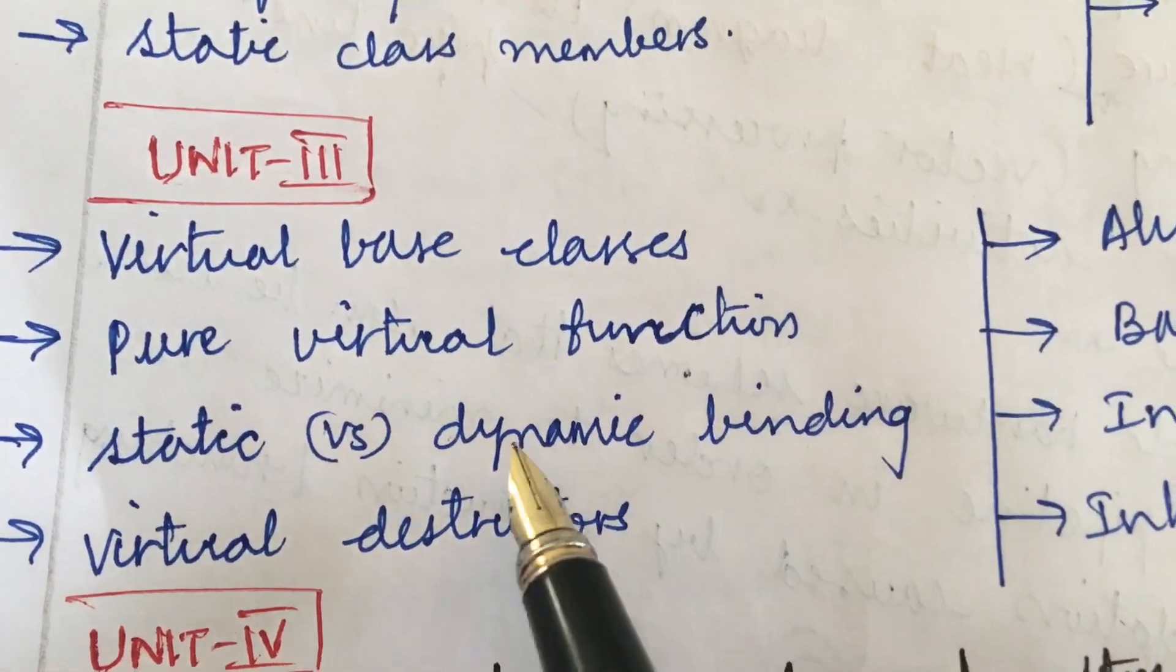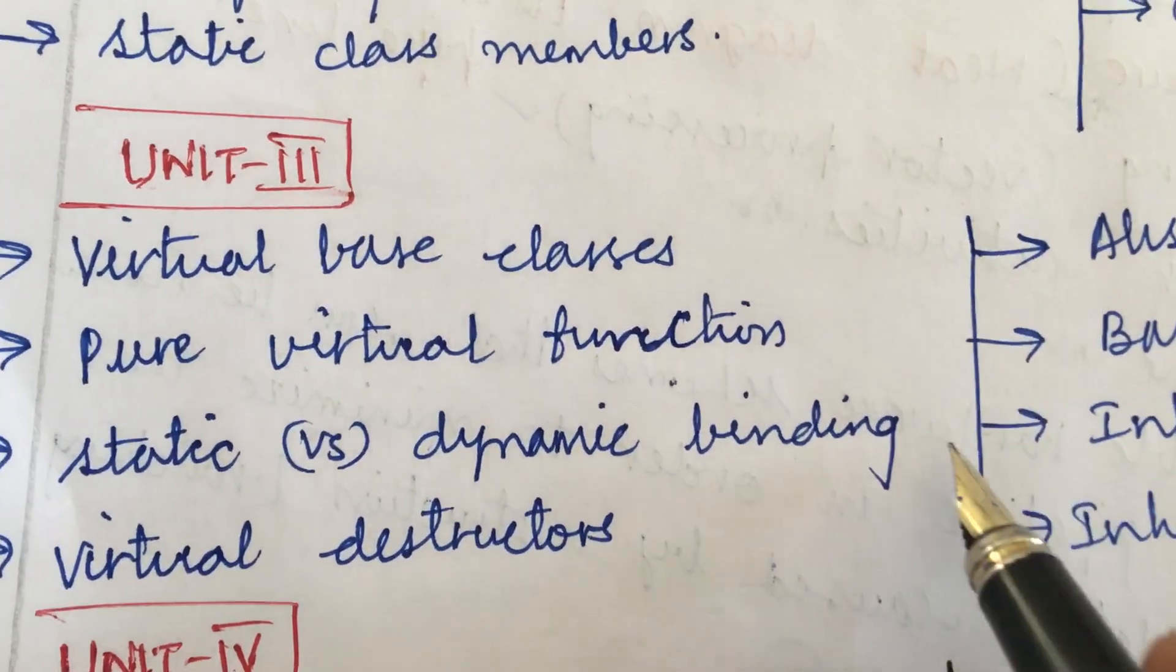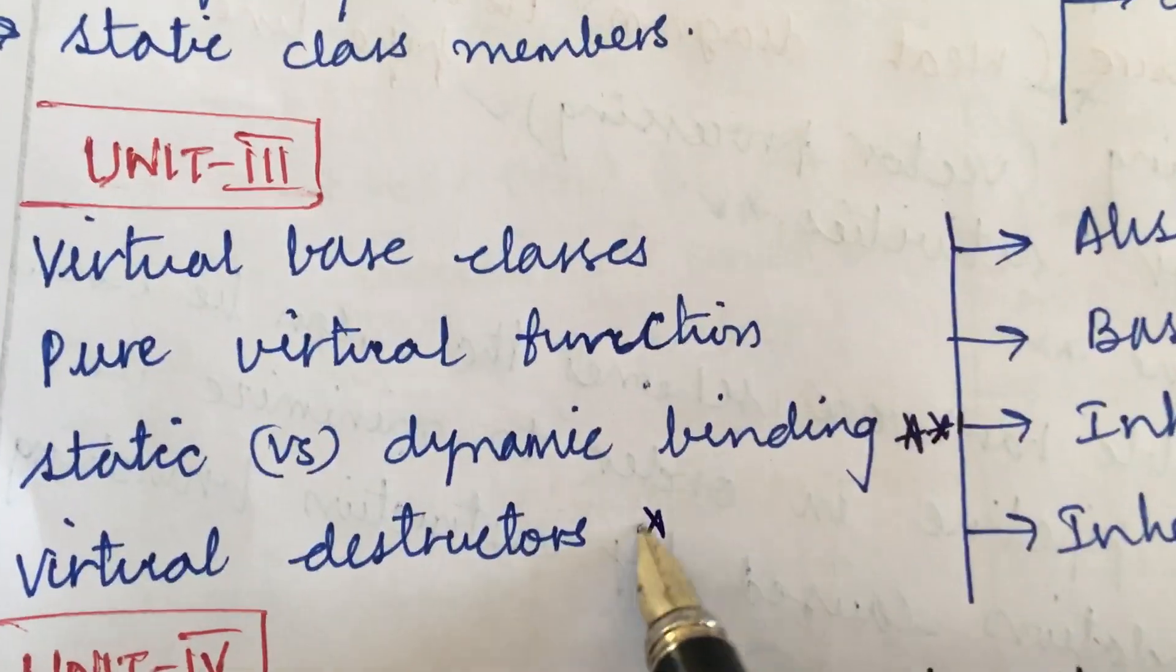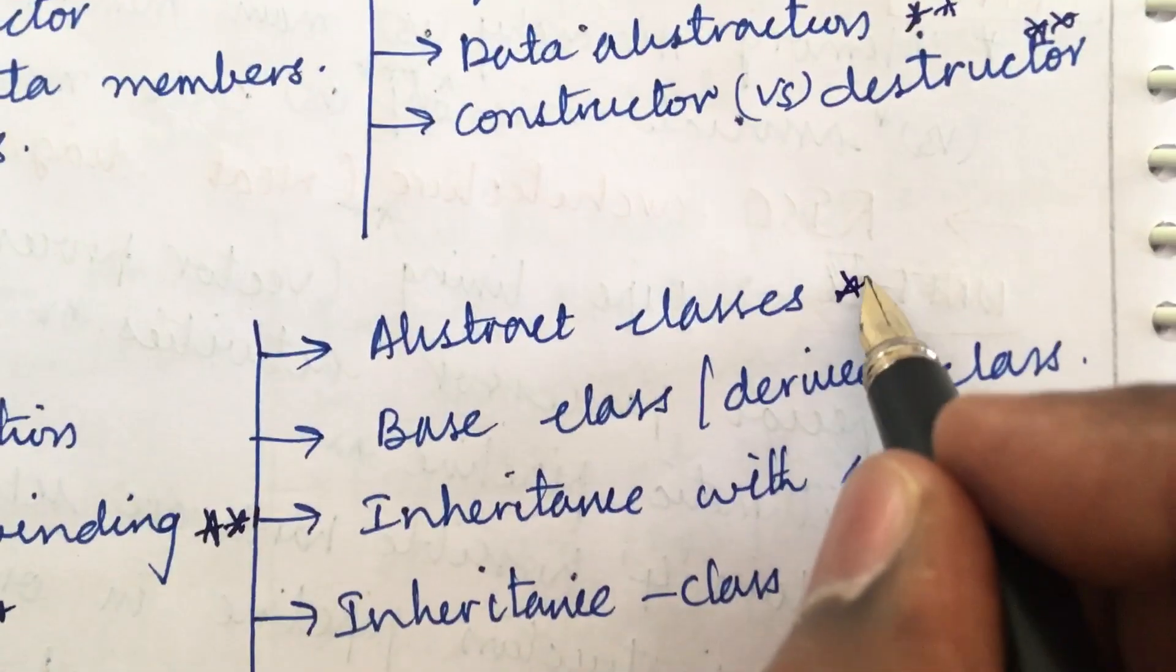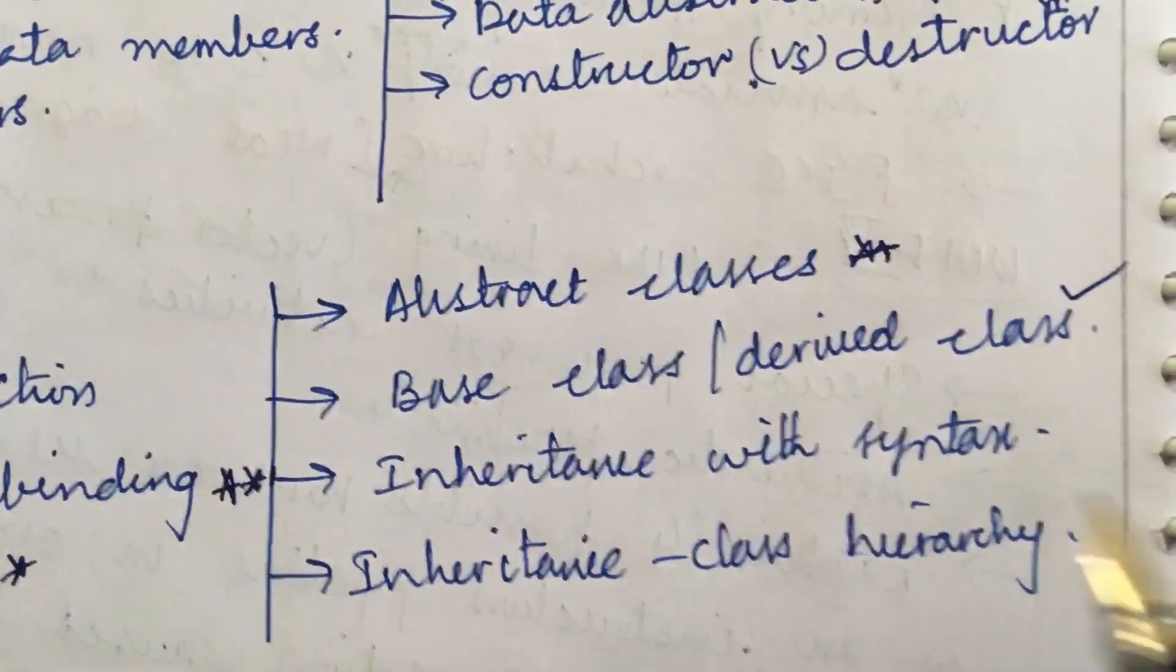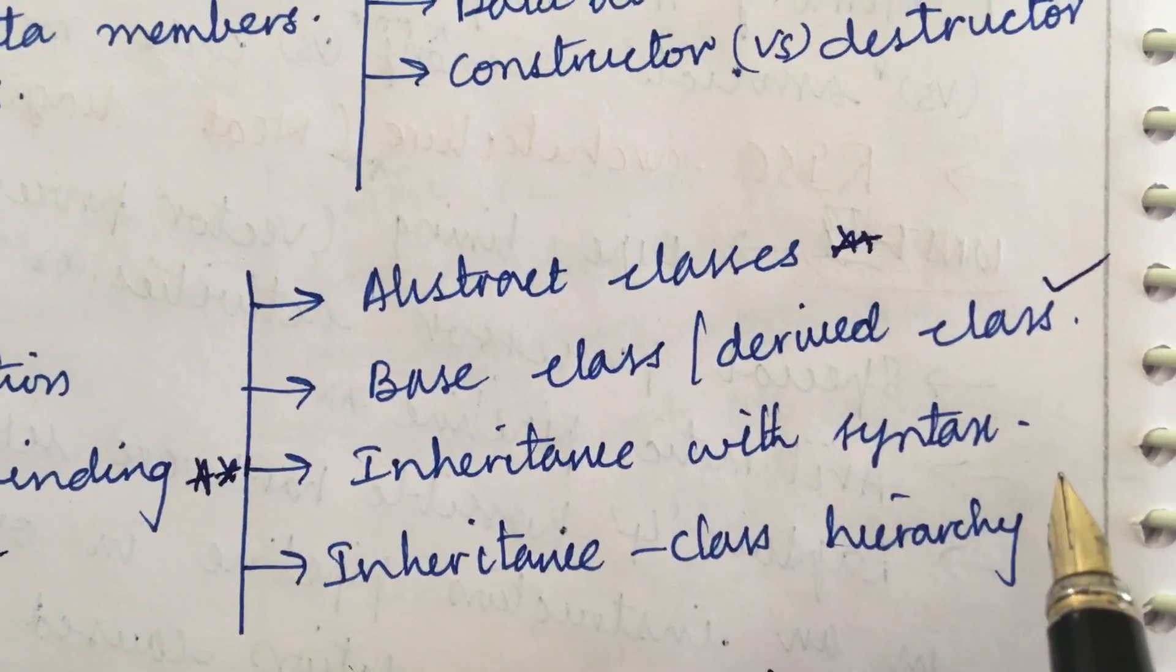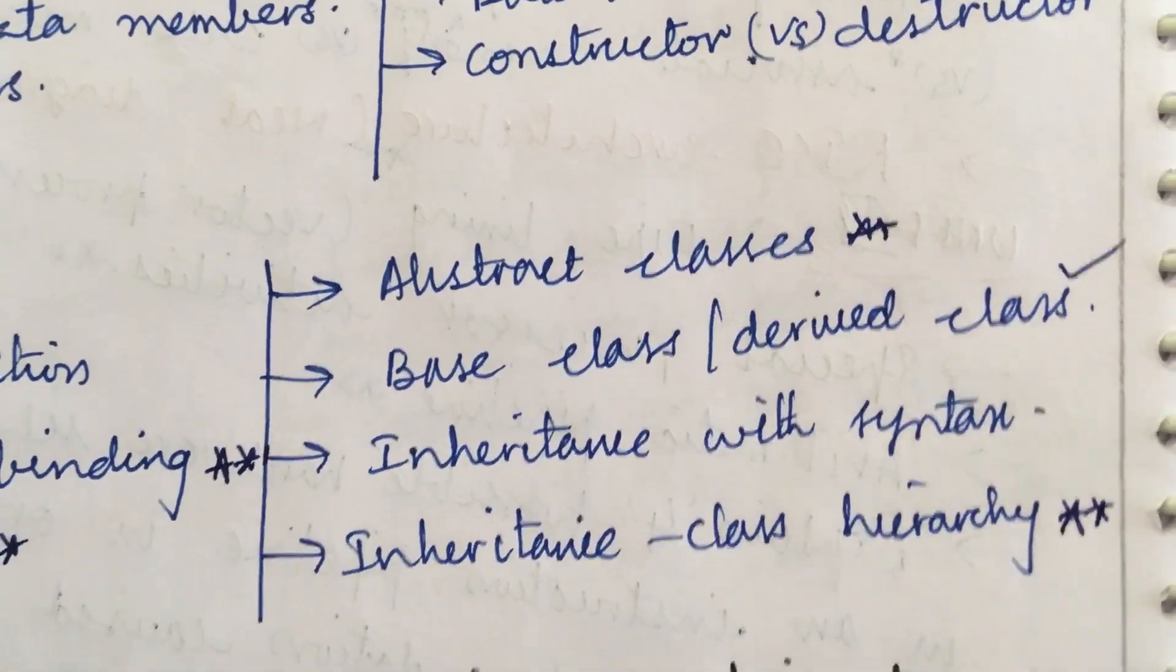Unit 3: virtual base classes, pure virtual function, static versus dynamic binding is the topmost question, virtual destructors, abstract classes, base class versus derived class, inheritance with syntax and inheritance class hierarchy is the topmost question.